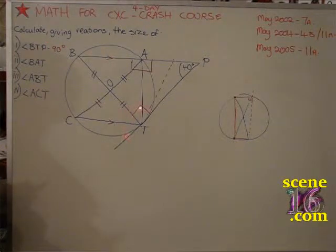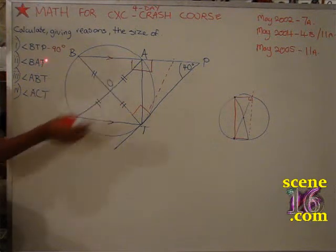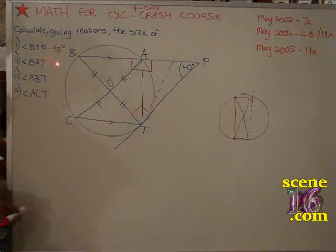So that's the first answer: angle BTP equals 90°. Then, given that this is 90, we find angle P. 40 and 90 is 130, and from 180 that gives us 50.